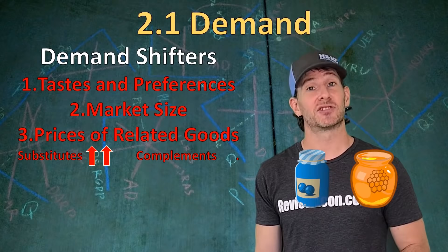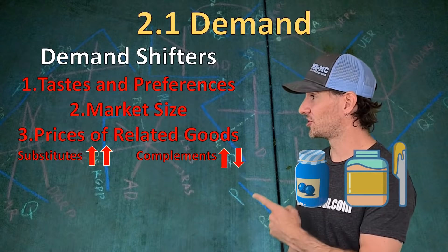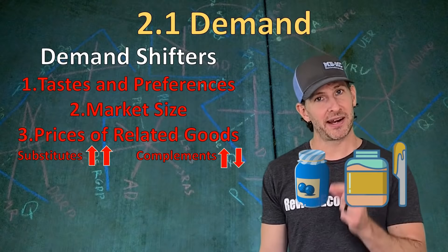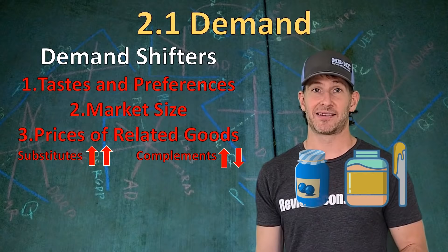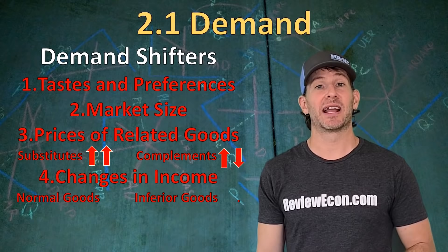For complements, one goes with the other. When the price of one goes up, demand for the other actually goes down. For example, jelly and peanut butter: when the price of jelly goes up, people buy less jelly, which also decreases demand for peanut butter because they go hand in hand. Bread and butter, toothpaste and toothbrushes, ice cream and ice cream cones — all examples of complementary goods.